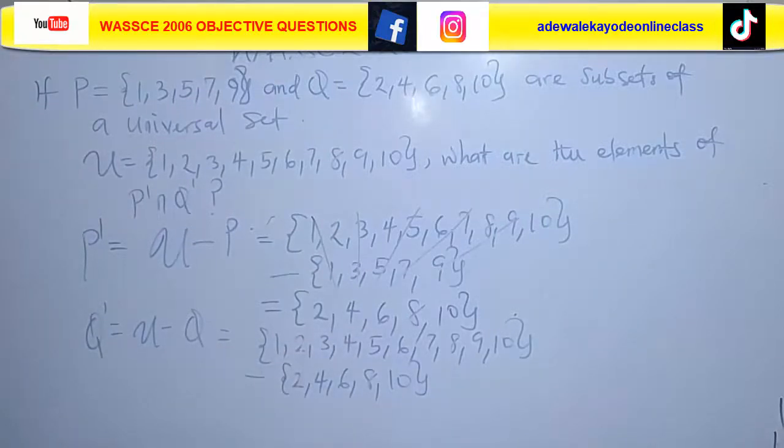Q is {2, 4, 6, 8, 10}. So let's take them away. Two will go, four will go, six will go, eight will go, and ten will go.